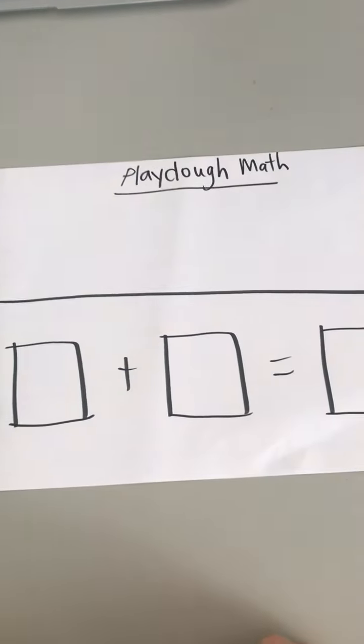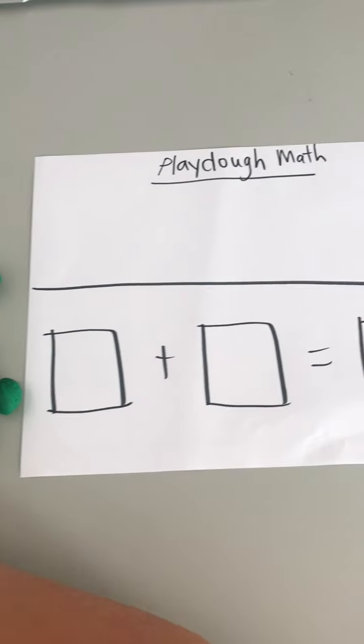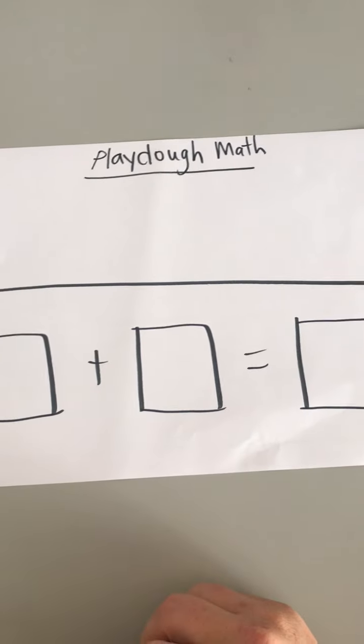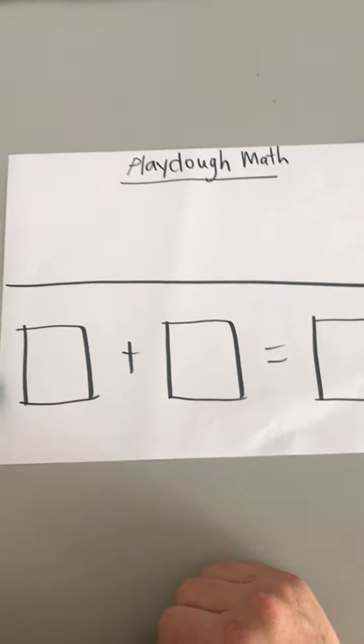So what I'd like you to do is have whoever's working with you create a number sentence, an addition sentence, like what is 5 plus 2, for example.